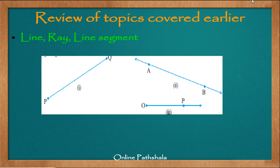Let us quickly review a few basic topics that we covered in earlier grades. Let's start with what we mean by a line segment. A line segment has two endpoints. Figure 1 here shows a line segment with points P and Q. A line segment is simply characterized by a line having two endpoints.